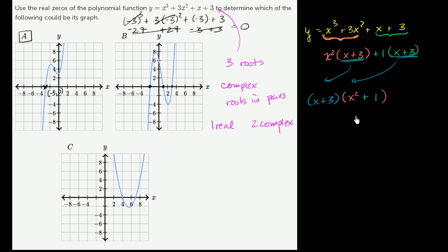And now your zeros are going to happen, or this whole y, remember this is equal to y. Y is going to equal 0 if either one of these factors is equal to 0. So when does x plus 3 equal 0? Well, subtract 3 from both sides. That happens when x is equal to negative 3.